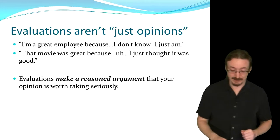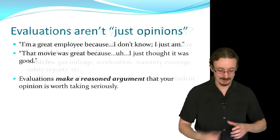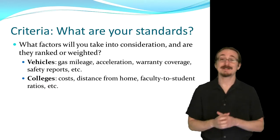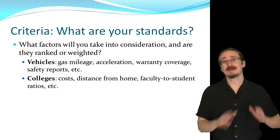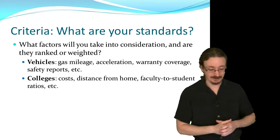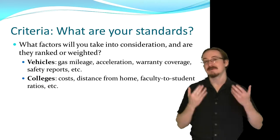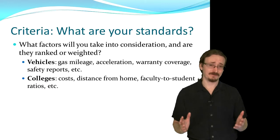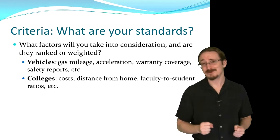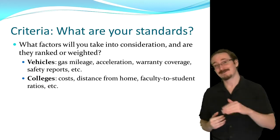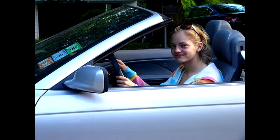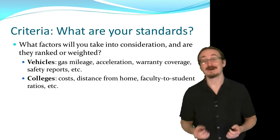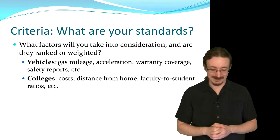If you want to make an evaluation, you have to have reasoned arguments to support that opinion. To do that, we need what's called criteria — the standards of judgment, the factors you'll be taking into consideration, how you rank those factors in terms of importance, and what constitutes good and bad in each criterion. For example, if you're looking at vehicles, you might look at gas mileage, acceleration, warranty coverage, and safety reports. Which of those factors means the most to you depends on your situation. If you're a parent buying a car for a 16-year-old, you'd probably put safety right at the top, and probably cost as well. However, if you're the child, you'll probably put the looks of the car at the top. It depends on the audience and what they are looking for.